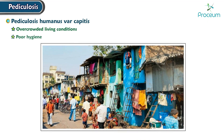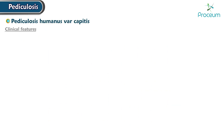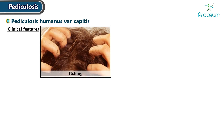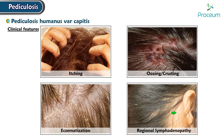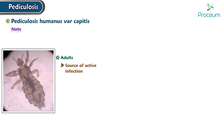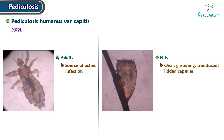Overcrowded living conditions and poor hygiene are identified as predisposing factors for the occurrence of head lice. Clinical features of head louse infestation include itching, oozing, crusting, eczematization, and regional lymphadenopathy. It's important to note that adults are often the source of active infection. Nits, which are oval, glistening, translucent lidded capsules, should be differentiated from dandruff to accurately diagnose and manage the condition.